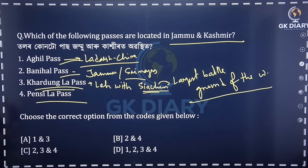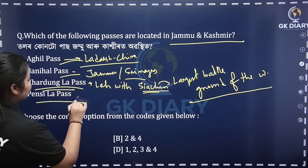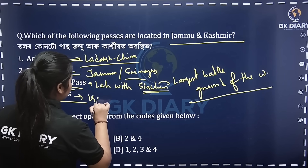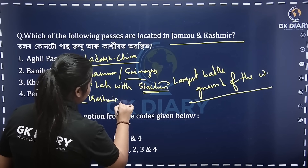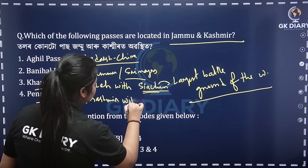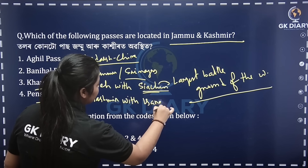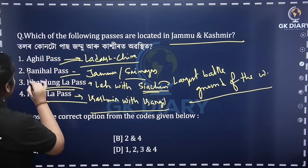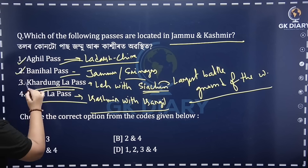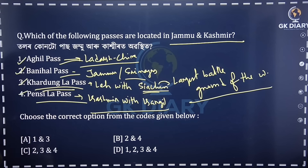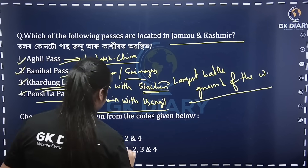Next, we need to find the pass. What is Kashmir with Kargil? So the details of the world are the details. One, two, three, four — correct option.